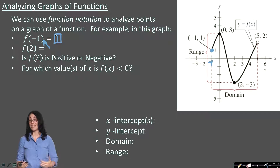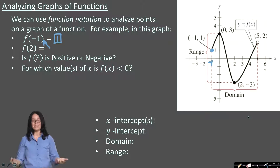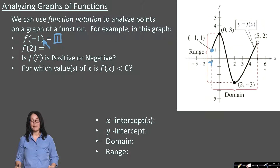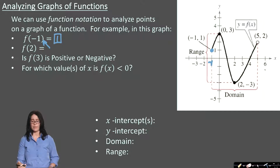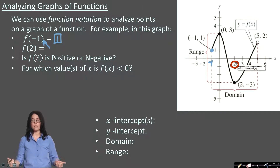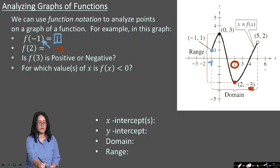Believe it or not, you had enough information to answer that using function notation. Let's look at another one — maybe you can try this on your own. What does it mean to find f of 2? It's saying: when the input x-value is 2, what is the appropriate output y? At x equals 2, the output looks to be down at the point with a y-value of negative 3. So if you said negative 3, you were right.